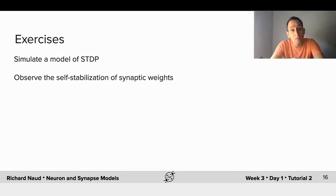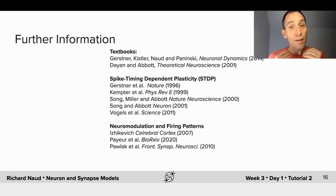So in the exercises, you'll be able to simulate a model of spike-timing-dependent plasticity. You'll be able to observe how this model leads to a self-stabilization of the different types of synapses that are impinging on the neuron, that is the excitation is balancing the inhibition. You'll also be able to observe how the synaptic weights will depend on the level of correlation between the input and the output. And so if you're interested in knowing more about this, I've assembled textbooks and papers here, and see ya!